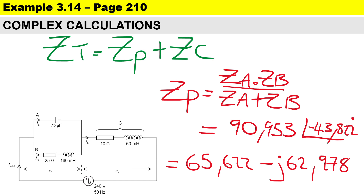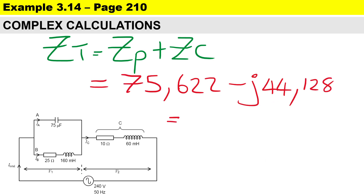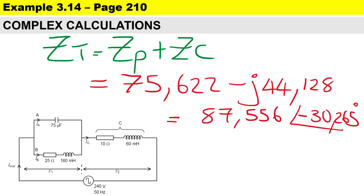The next step is to work out the total impedance by taking the impedance of the parallel branch and adding it to the impedance of branch C — adding in rectangular format. We end up with the answer in rectangular format, and in polar format: 87.556 ohms at an angle of minus 30.265 degrees.